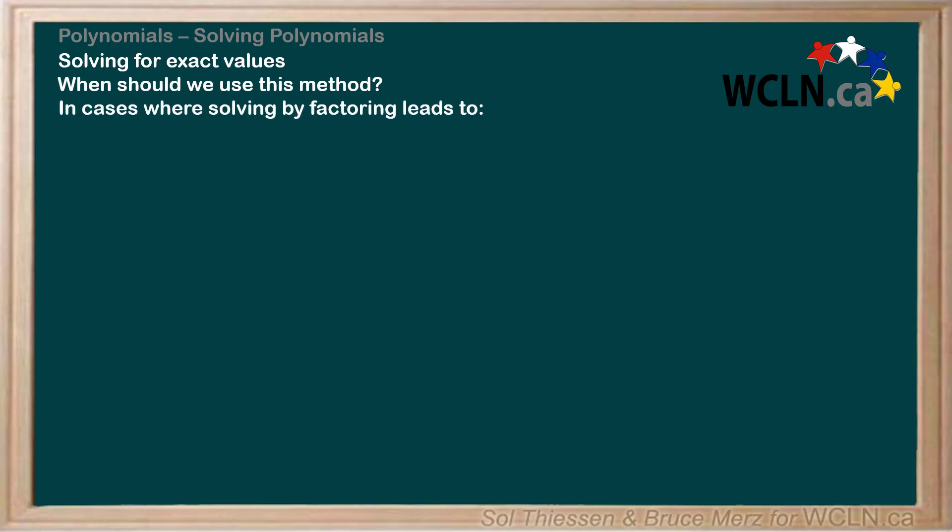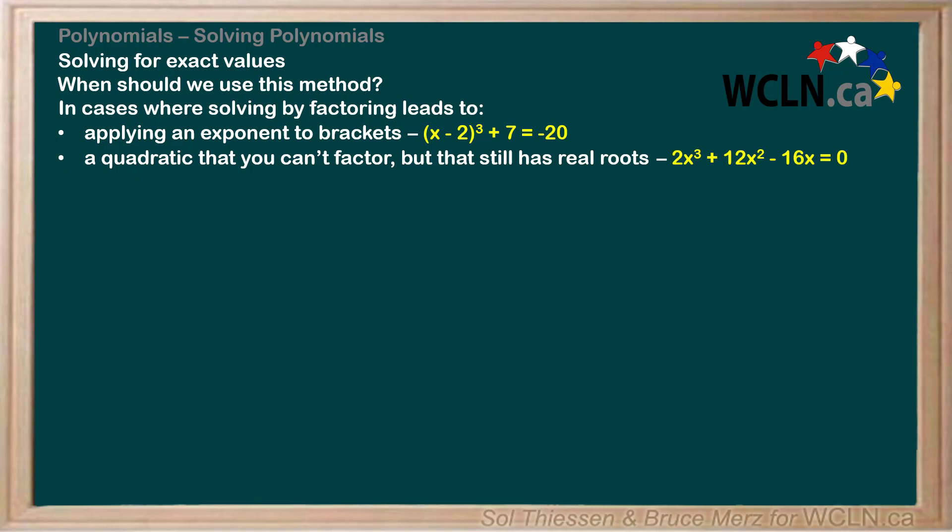It works best in cases where solving by factoring leads to applying an exponent to brackets, like in the case of (x - 2)³ + 7 = -20, or when factoring leaves you with a quadratic that you can't factor but that still has real roots, like in the case of 2x³ + 12x² - 16x = 0. Let's run through how we can solve for exact values in both of these cases.